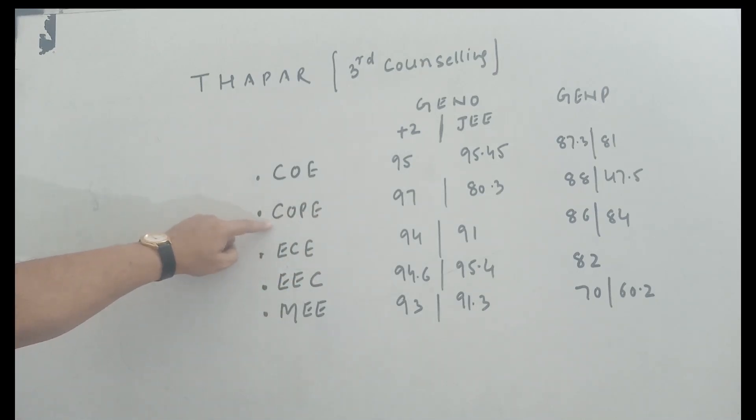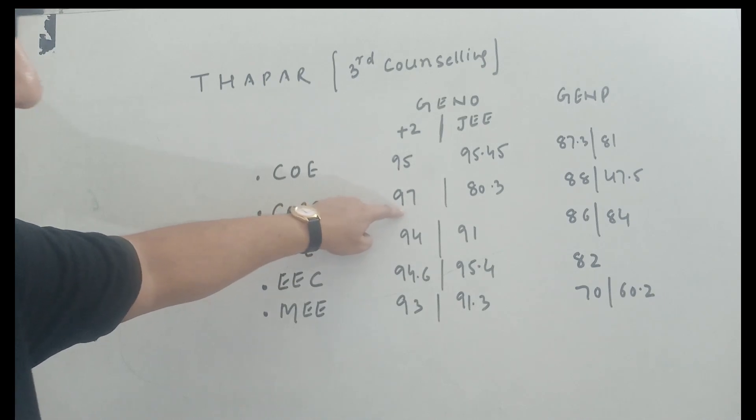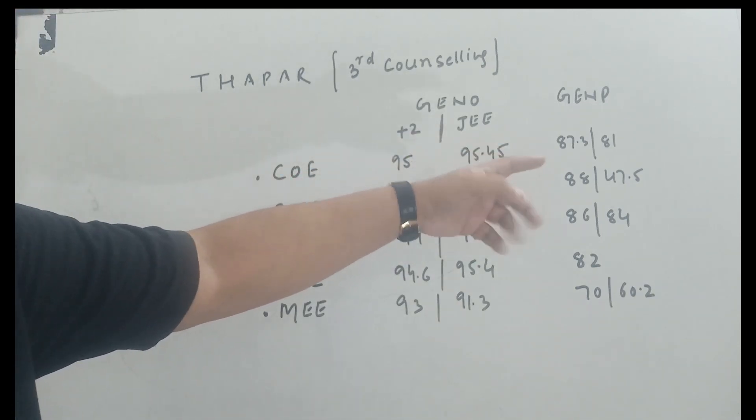So if there is any child in Punjab who wants to do engineering, interested in computer, this is the cutoff. In JEE there is no good score. This is the golden option that I want to mention, especially for Punjab students. Because you will get 81 percentile in JEE, you will get 95.45 percentile. You are going to get a good quality of students. Similarly, this is computer science and engineering campus. If someone wants to leave it, it is 97, 80.3 percentile. And for Punjab students, PCM 88 and in JEE there is no percentile.